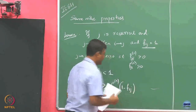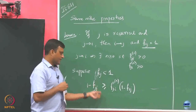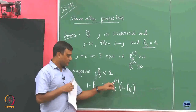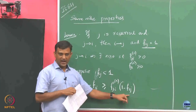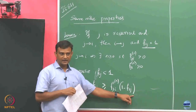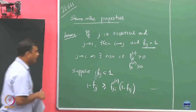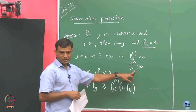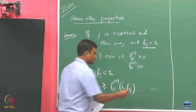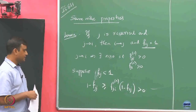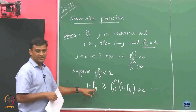Let us say first I hit state I and after that I do not return to state J. So 1 minus F_iJ tells that if I start from I, I never go back to J again. This gives one possibility of not going back to state J, which is why this is a lower bound. We know that F_JI(n) is strictly positive, and if F_iJ is strictly less than 1, this product is positive. So this proves that F_JJ is strictly less than 1.